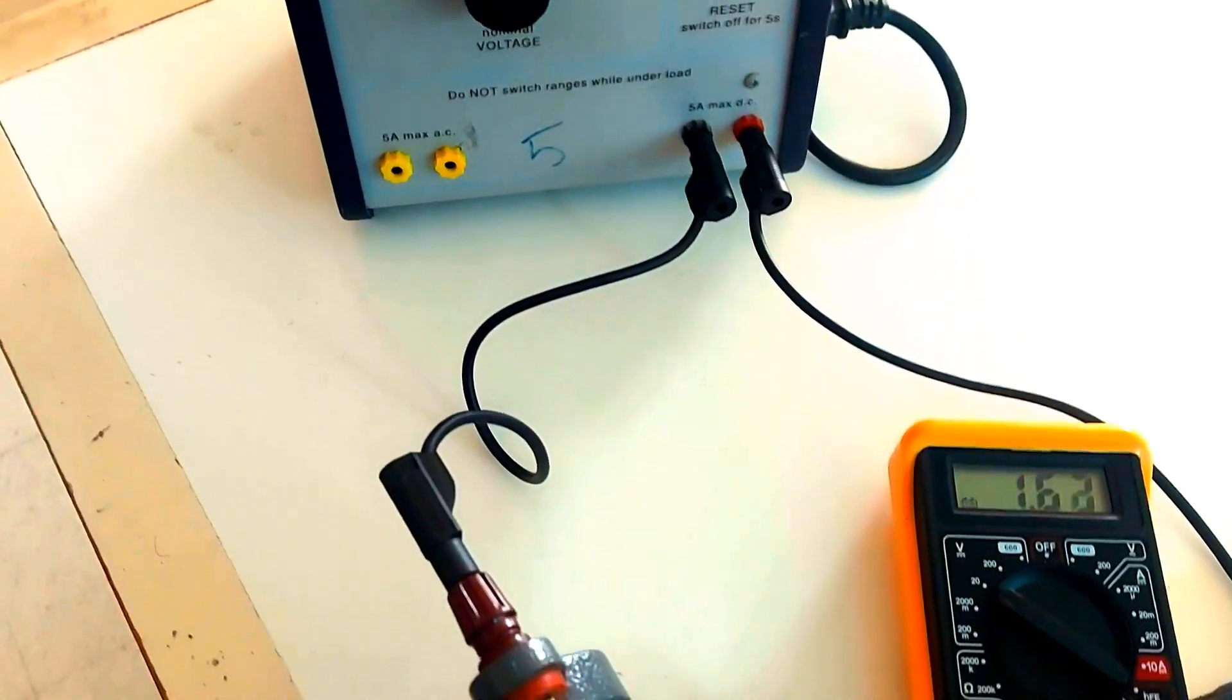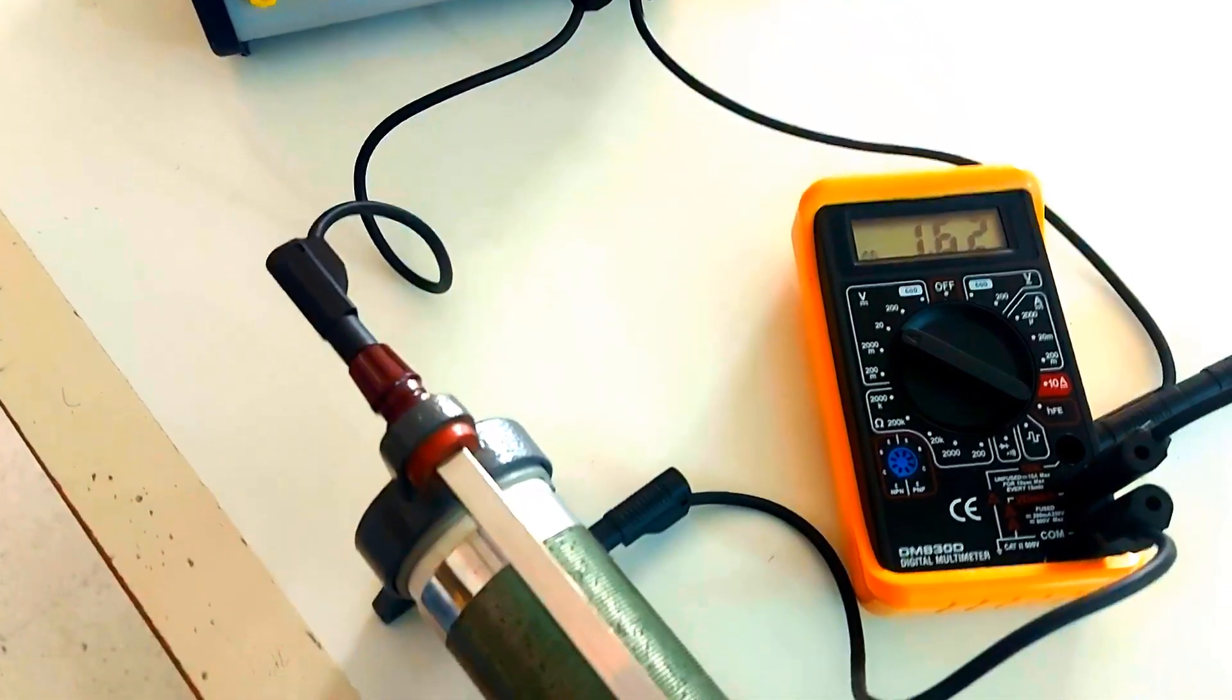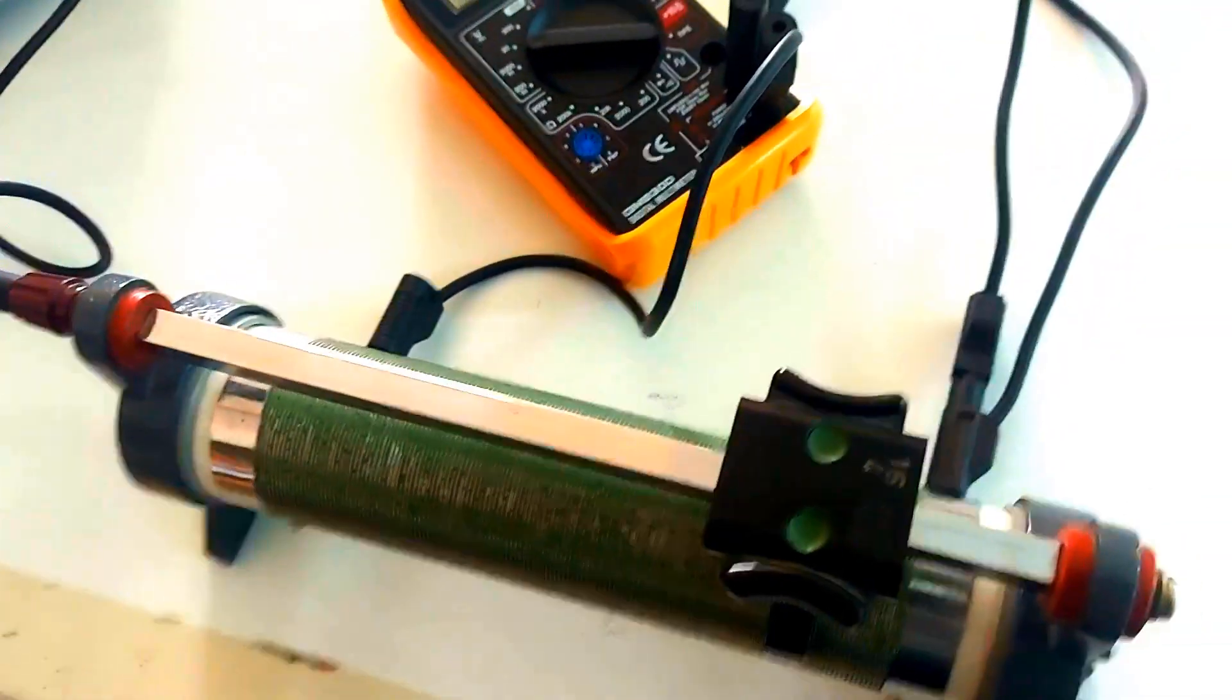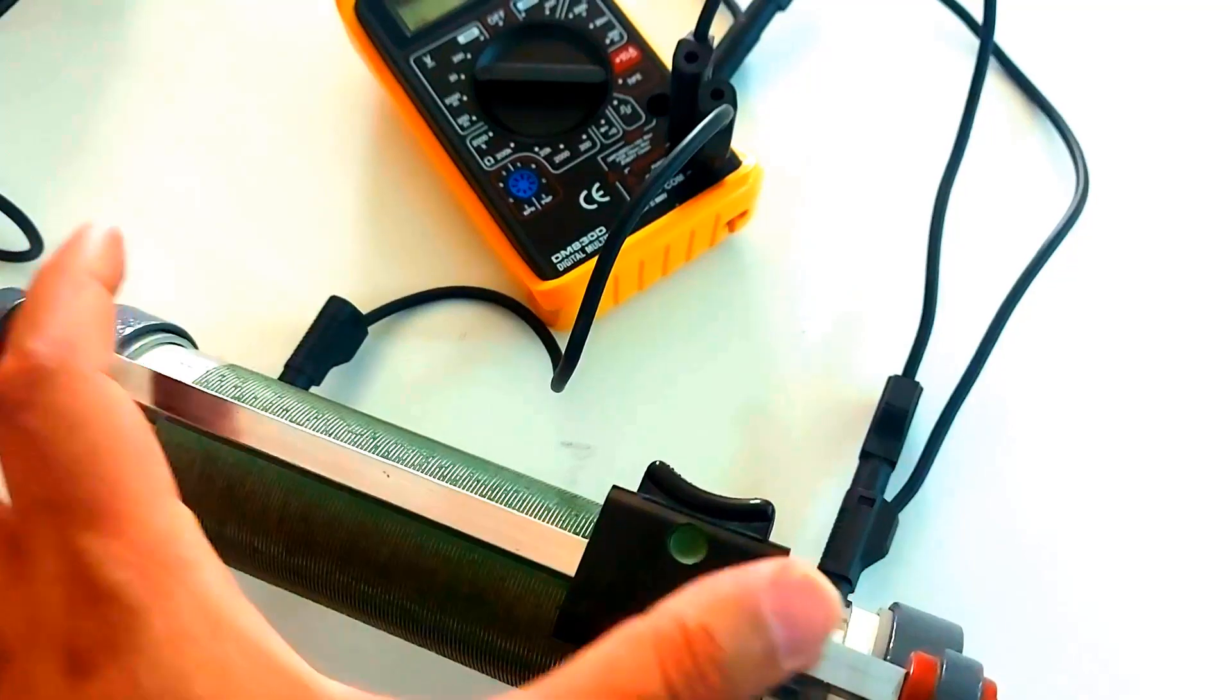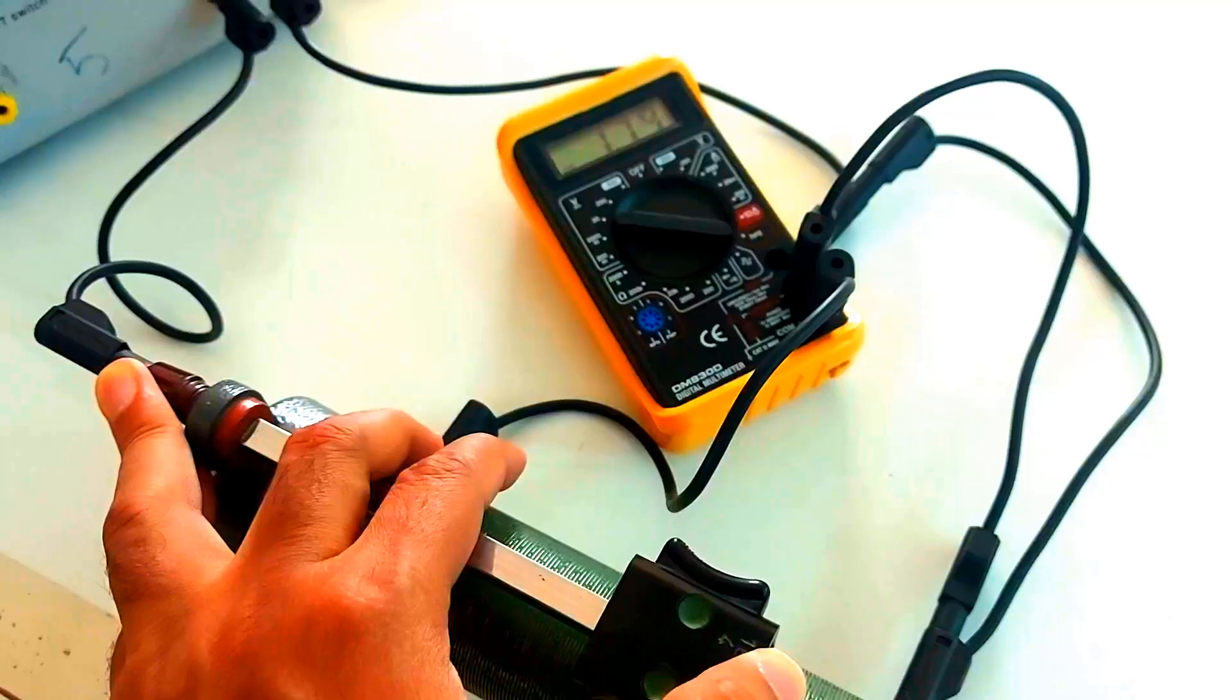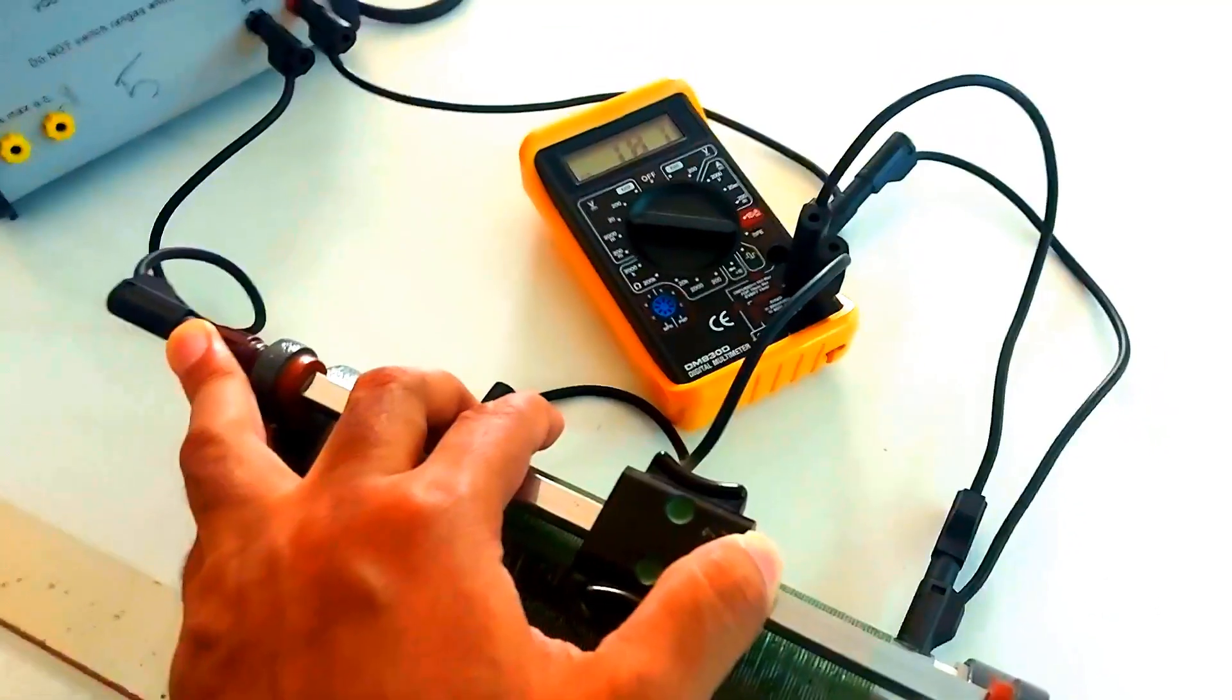Hey everyone, welcome back to Tutor for Exam Physics. Today we are exploring a fascinating component that plays a key role in controlling circuits: the rheostat. Ever wondered how sliding a contact can change voltage and current in a circuit? Well, let's dive right in.